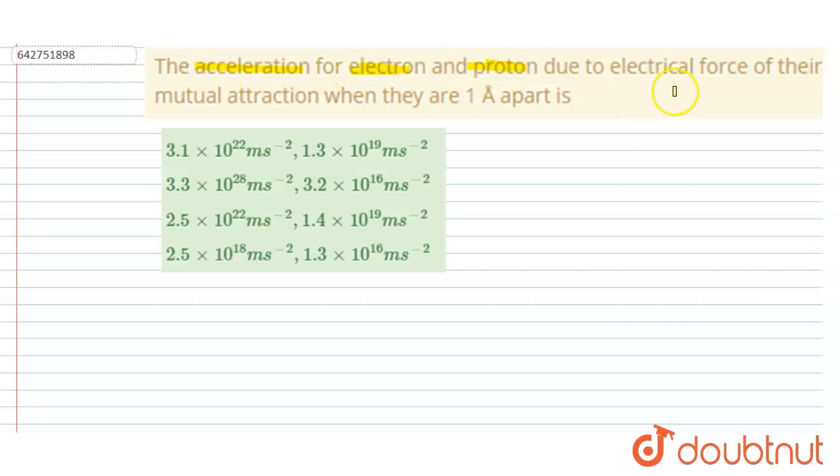and proton due to electric force of their mutual attraction when they are one angstrom apart. So if you see, let us take a proton and electron which are at a distance of one angstrom. So let's say the r is 10 to the power minus 10 meter, right?